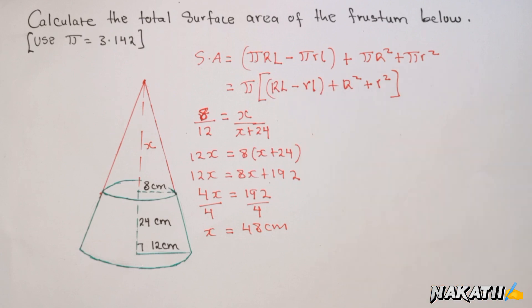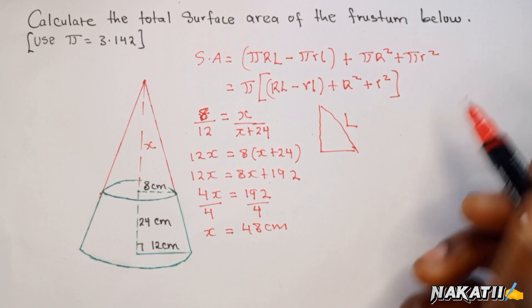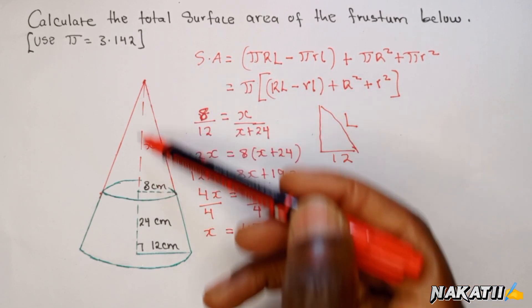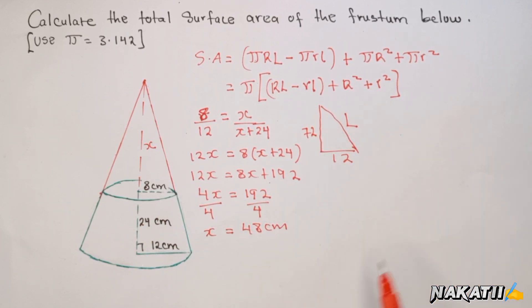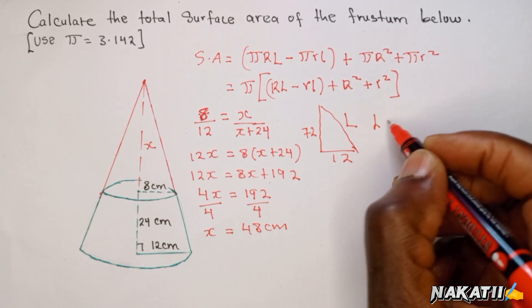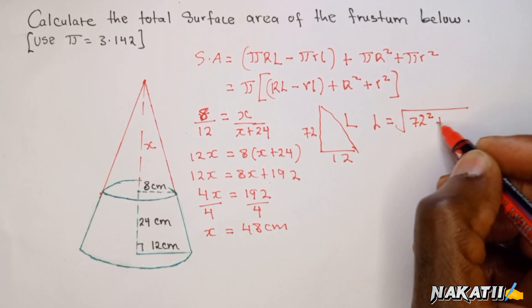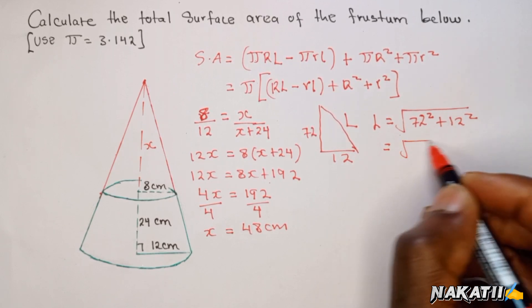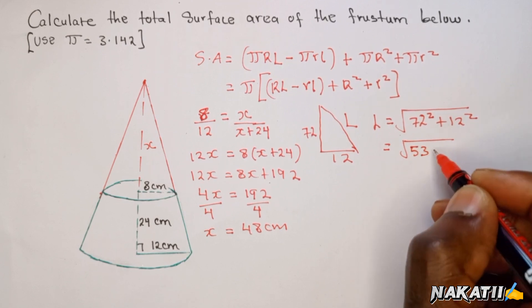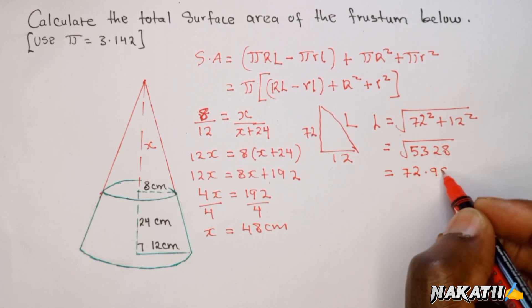Knowing x helps us find L and small l. We extract the bigger triangle: capital L is the slant height, the base radius is 12, and the full height is 48 + 24 = 72. Using Pythagoras: L = √(72² + 12²) = √5328, giving capital L = 72.993.